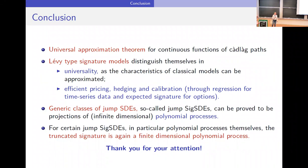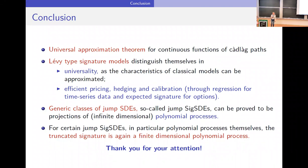To conclude: I showed a universal approximation theorem for continuous functions with respect to the J1 topology of Cadlàg paths, then introduced Lévy-type signature models where this universality result applies, leading via pricing formulas to efficient pricing, hedging, and calibration. For many processes one can use polynomial technology to compute expected values of the signature. Thank you.